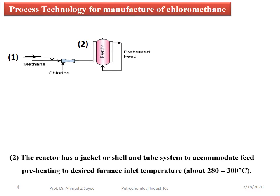Step 2: The reactor has a jacket or shell and tube system to accommodate feed preheating to the desired furnace inlet temperature of about 280 to 300 degrees centigrade.